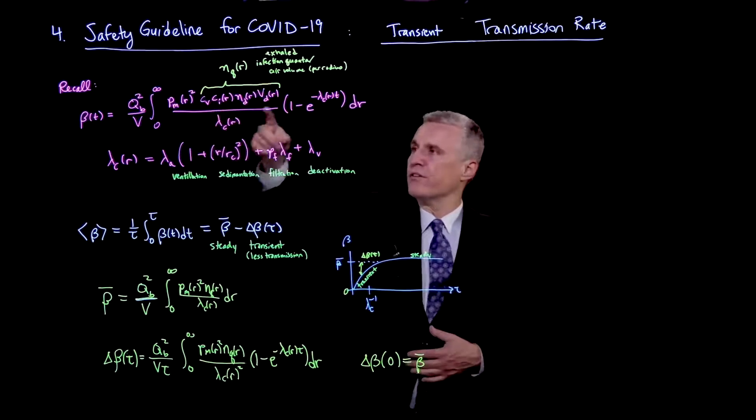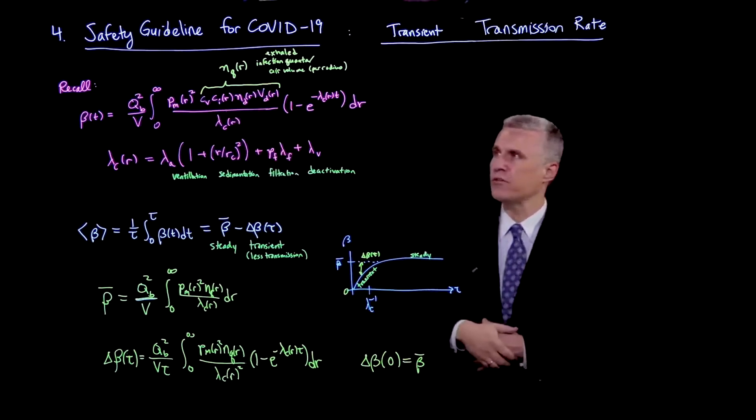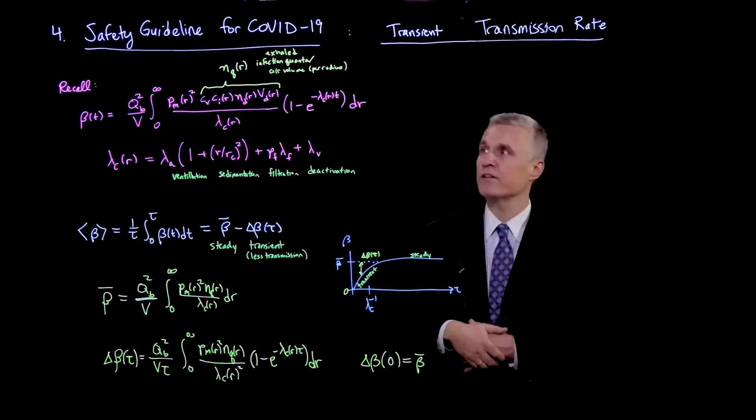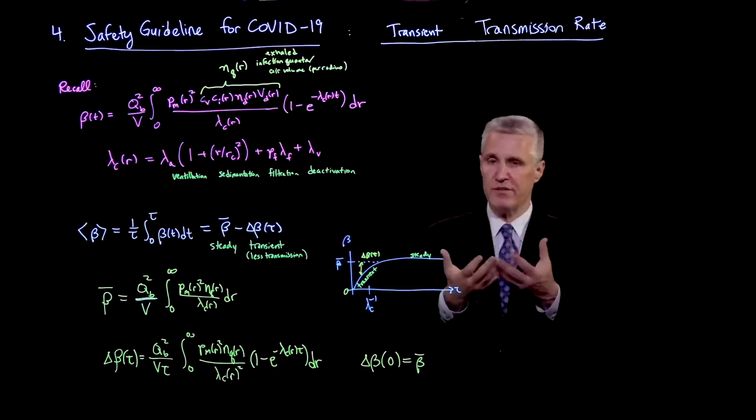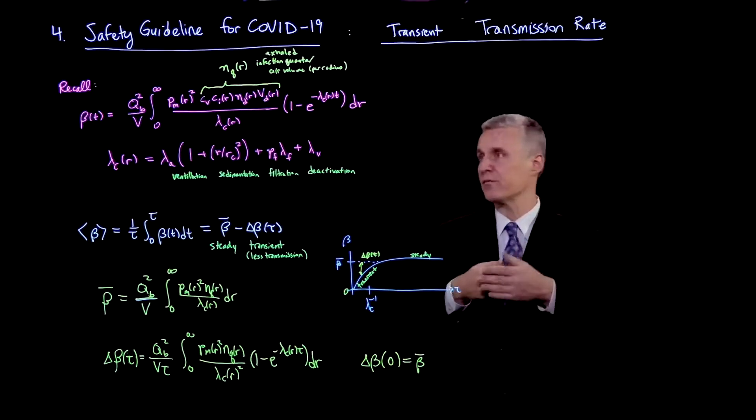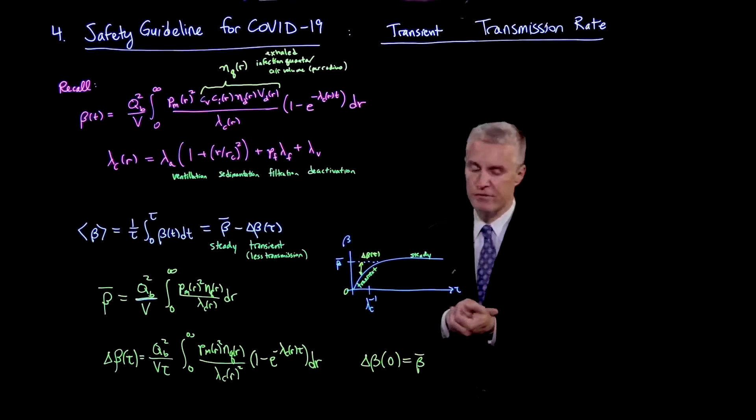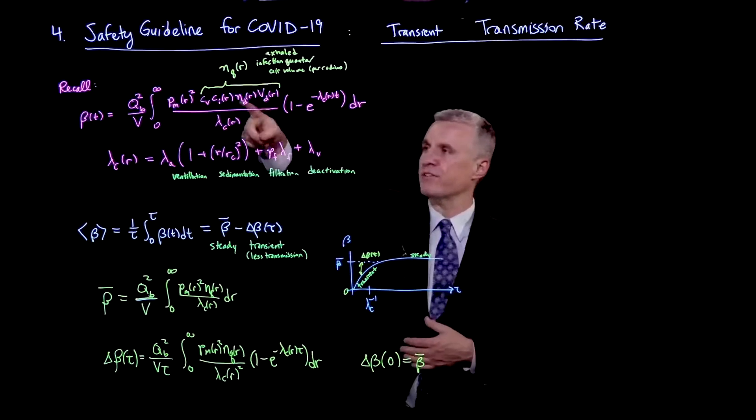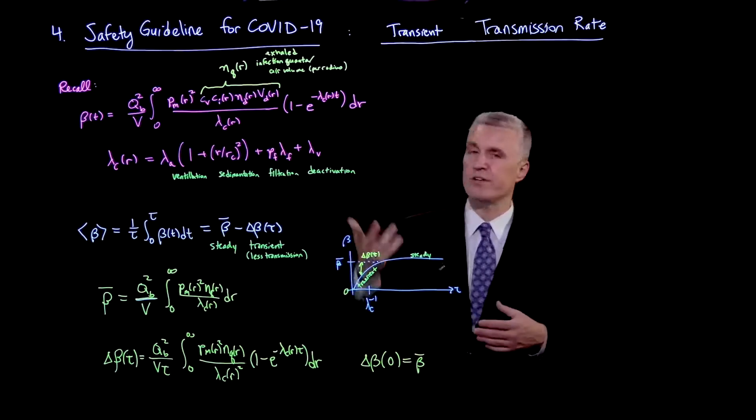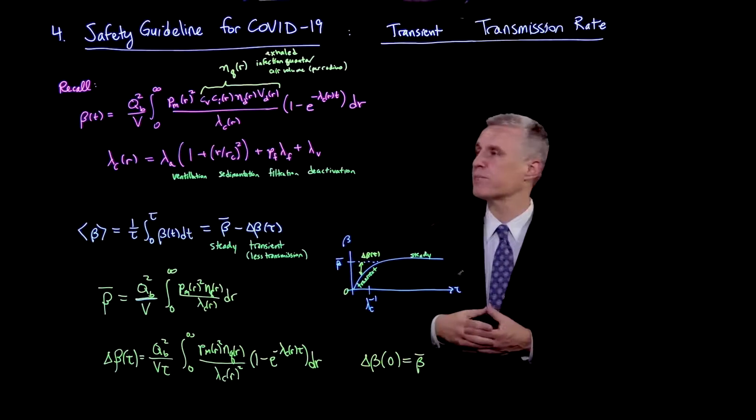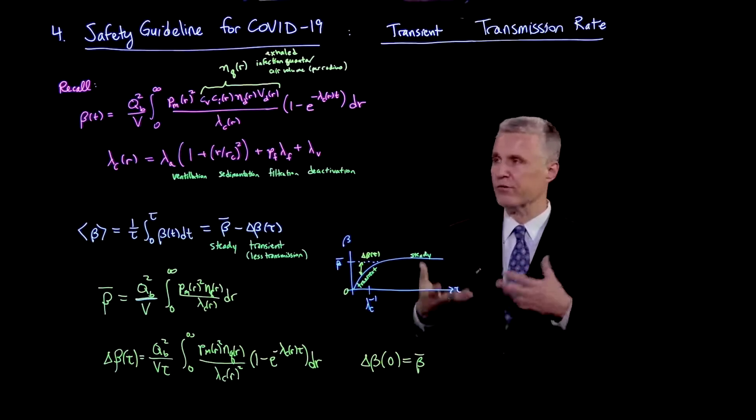And then for the production of aerosols, there's this Nq, which is the number of exhaled infection quanta per volume, per air volume, leaving the breath per radius because it's still resolved by the different droplet radii. And this has several contributions. It has Nd, which is the distribution of droplet sizes. Vd is the volume of each droplet. Depends on the respiratory activity.